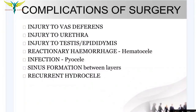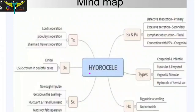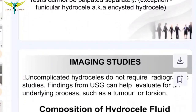Complications of surgery include injury to the vas deferens, injury to the urethra, injury to the testis or epididymis, reactionary hemorrhage which may cause hematocele, infection causing pyocele, sinus formation between the layers of the scrotum, and recurrent hydrocele. When dealing with hydrocele, remember this mind map covering the history, types, diagnosis, physical examination findings, and treatment options. Thank you for watching — do subscribe for more such videos.